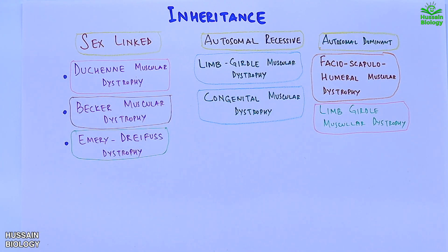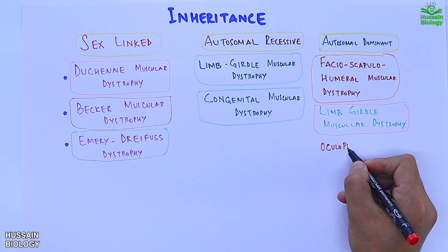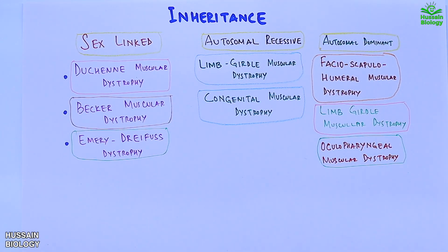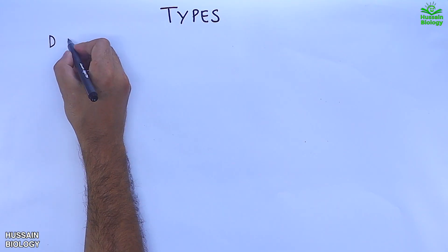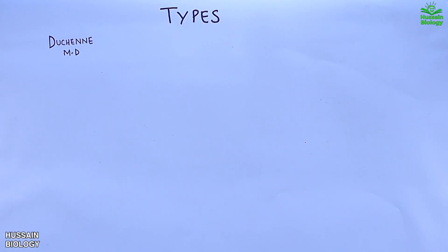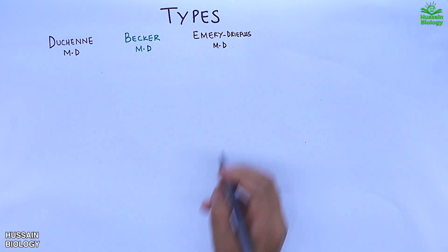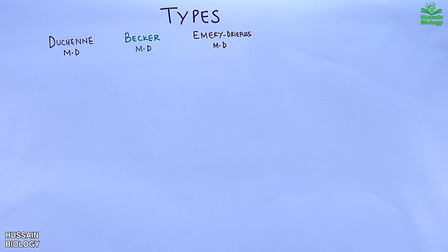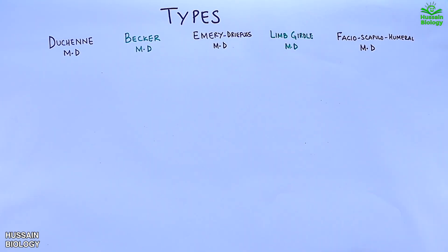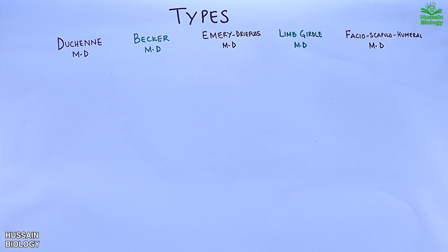The third autosomal dominant disorder is oculopharyngeal muscular dystrophy. Now let's discuss the important types of muscular dystrophy: first, Duchenne muscular dystrophy; second, Becker's muscular dystrophy; third, Emery-Dreifuss muscular dystrophy; fourth, Limb-girdle muscular dystrophy; and fifth, facioscapulohumeral muscular dystrophy.